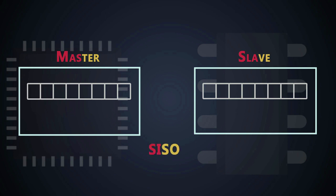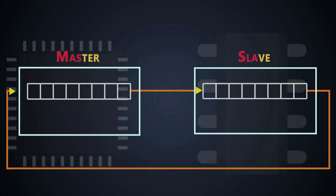These shift registers operate in serial-in serial-out mode. The output of the master shift register is connected to the slave shift register, and the output of the slave shift register is connected to the input of the master shift register. This makes the connections operate in a loop. The link connected to the input of the slave shift register is the MOSI line, and the link connecting the output of the slave shift register to the input of the master shift register is the MISO line.